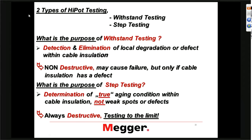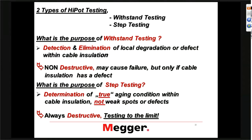Two types of hypotesting: withstand testing and step testing. The purpose of withstand testing is detection and elimination of local degradation. It's non-destructive — I want to emphasize this. A withstand test is a non-destructive test. The cable might fail, but it fails because it has a defect. That is in stark contrast to a step test, which is also a hypot test. The step test is the determination of the true aging condition of the cable, and it's always a destructive test because you have to test it until failure.